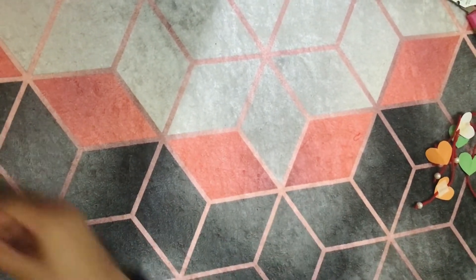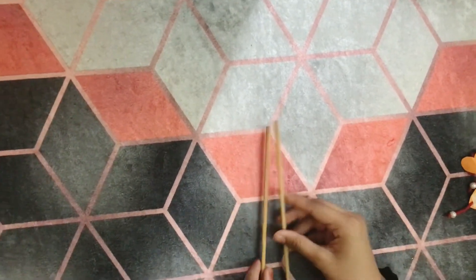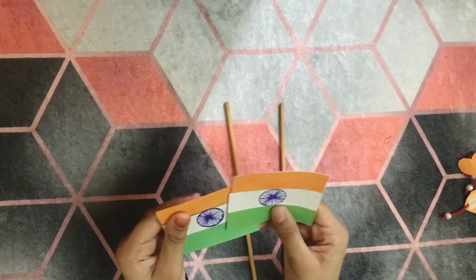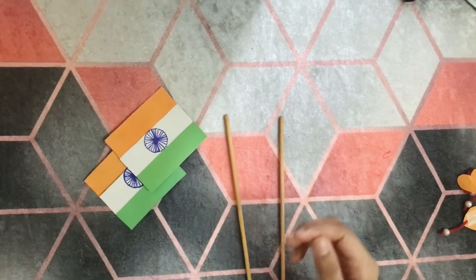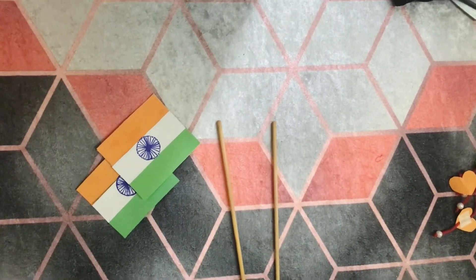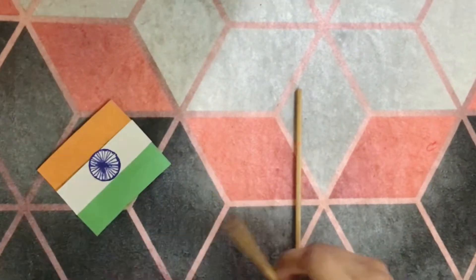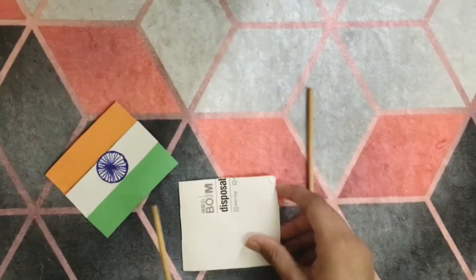Now we need two skewers; you could also take paper sticks or straws. Now I am going to stick the flags onto the skewers.